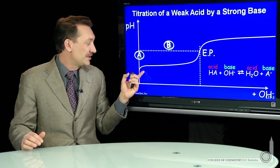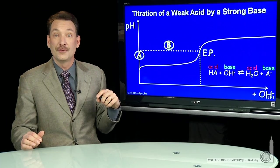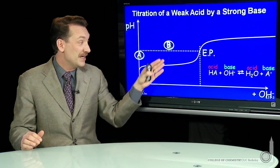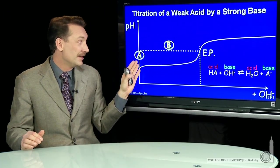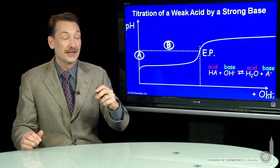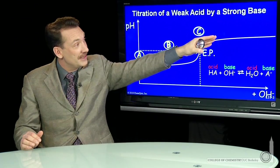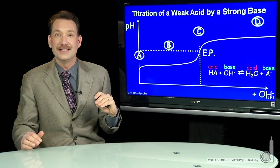That's when we have simply a solution of the weak acid with no base added yet. Point B is right between the initial and endpoint. Point C is at the endpoint, and beyond that is point D.